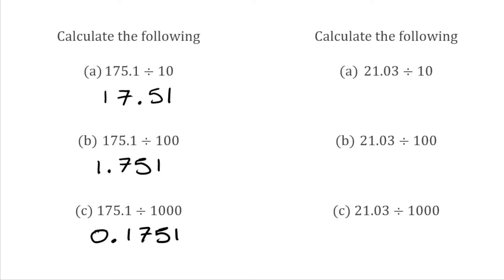Moving to the next question, we've got 21.03 divided by 10. Because we're dividing by 10, we jump all the digits one place to the right. The 1 that was on the left is now on the right-hand side of the decimal. So this answer is simply 2.103.